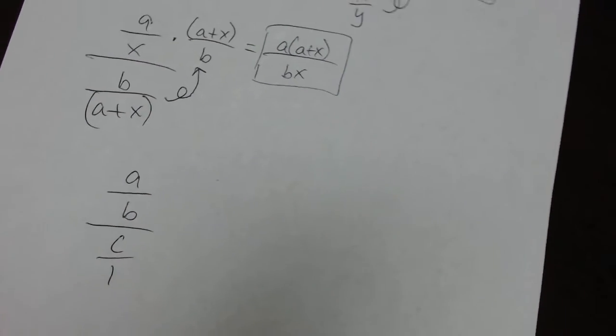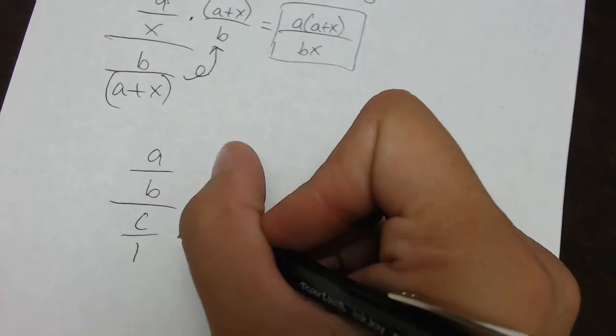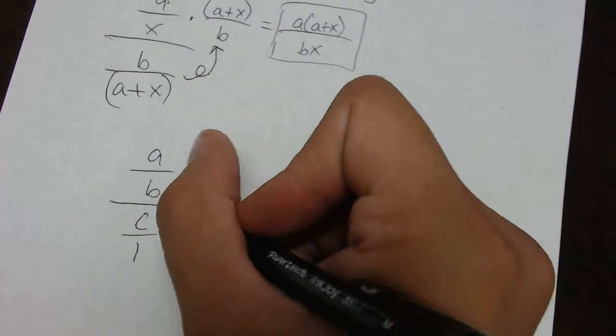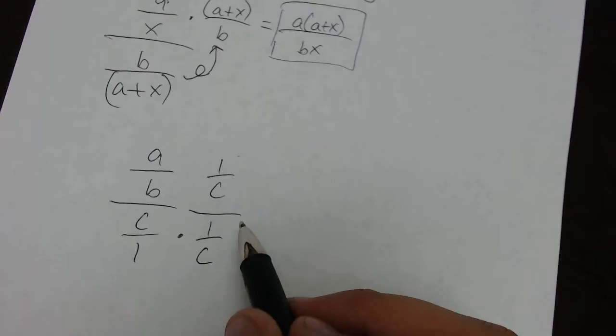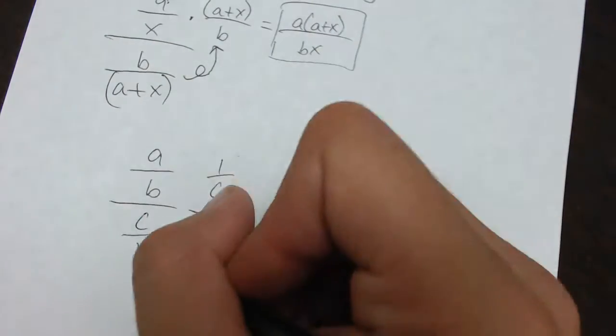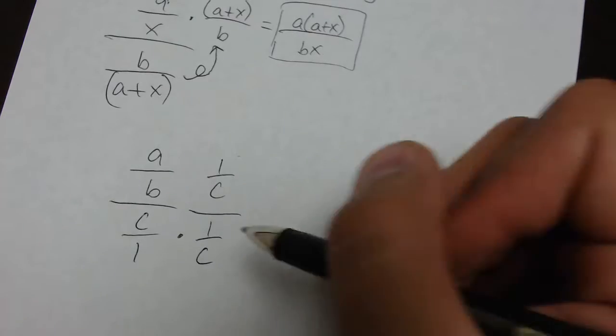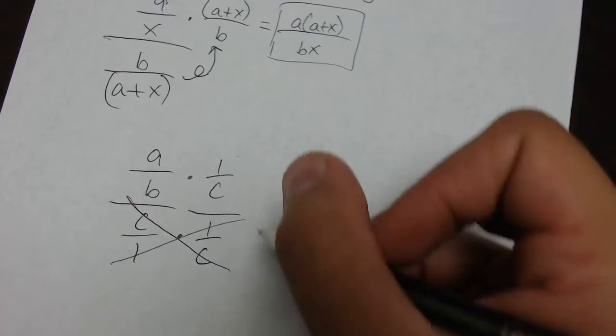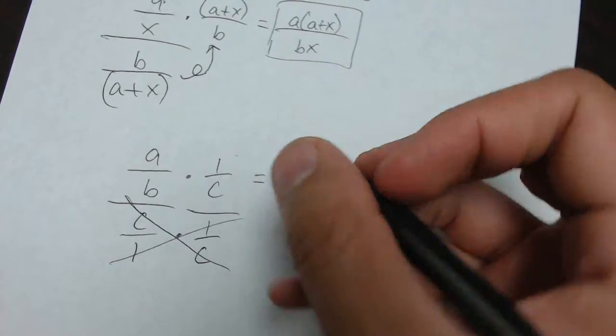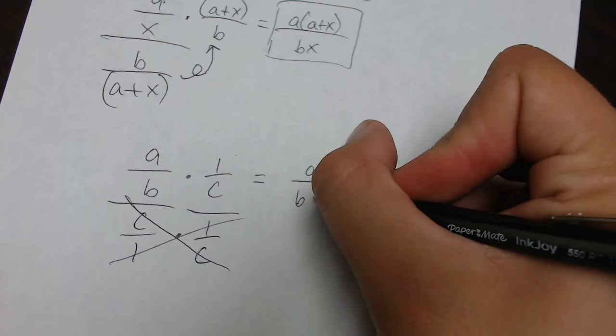So, the way that this method works is we take the denominator, and we're going to multiply it by the reciprocal, which is 1 over C. But then we'll also do that to the numerator. So, what this does is it's essentially taking this whole fraction and multiplying it by a value of 1, because 1 over C over 1 over C is just another way of writing the number 1. And then what happens is the denominator will cross-cancel, and then the numerator, we have the same problem that we have been doing, which is A over B times C.